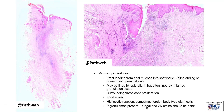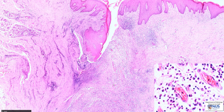If granulomas are present, then fungal stains as well as Ziehl-Neelsen stains should be done to look for microorganisms. Here is a higher magnification picture showing the opening of one of the ends of the tract, and we can see the granulation tissue, which is composed of very small, delicate blood vessels and lots of surrounding edema and inflammatory infiltrates.